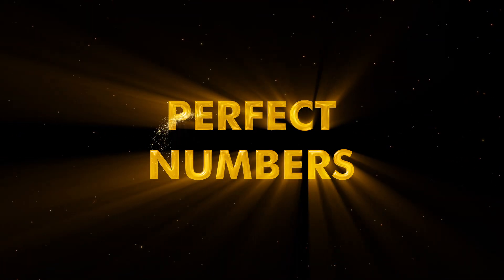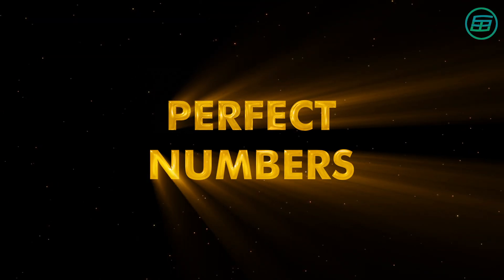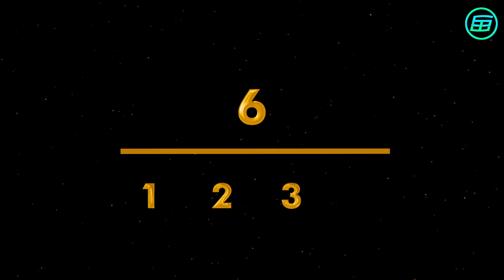A perfect number is a whole number that is equal to the sum of all its factors except itself. For example, if we look at the number 6, it can be divided by 1, 2, and 3 without a remainder. If we add these numbers, we get 6. So 6 is a perfect number.